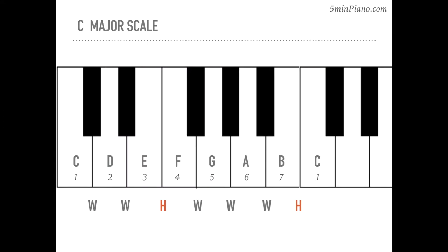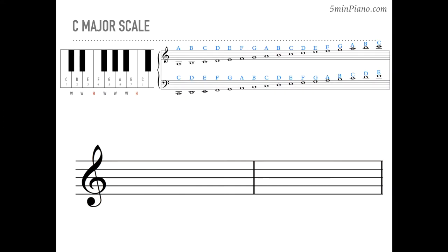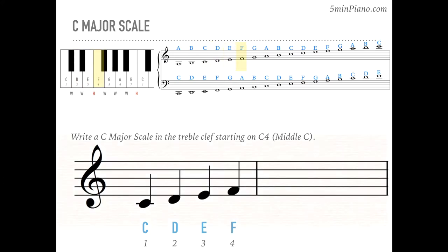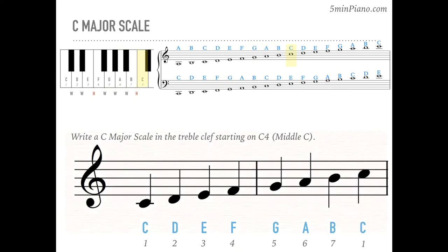Let's start with the C major scale. The cheat sheet at the top with all the letter names is available to print out at 5-MinutePiano.com as well. Here we have everything we need to write the C major scale on the treble clef staff. Start by drawing middle C, then D, E, F, G, A, B, and C.